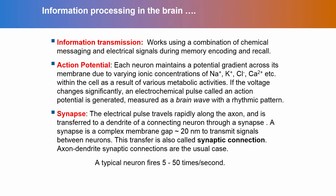Action potential: each neuron maintains a potential gradient across its membrane due to varying ionic concentrations of sodium, potassium, chlorine, and calcium ions within the cell as a result of various metabolic activities — it can be anabolism or catabolism. If the voltage changes significantly, an electrochemical pulse called an action potential is generated, and this is measured as a brain wave with a rhythmic pattern. If you look into projects such as the connectome project or the human brain project, there are biophysical models for these neurons. I encourage interested readers to look into these projects to learn biophysical models and see how we can mathematically abstract a biological neuron as close to reality as possible.